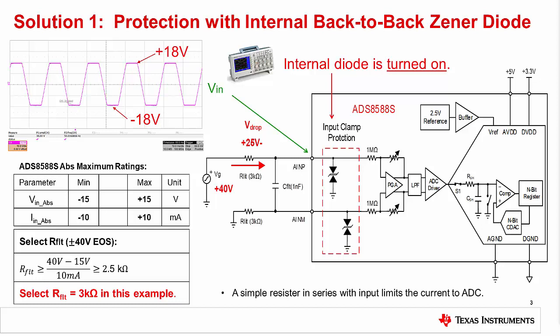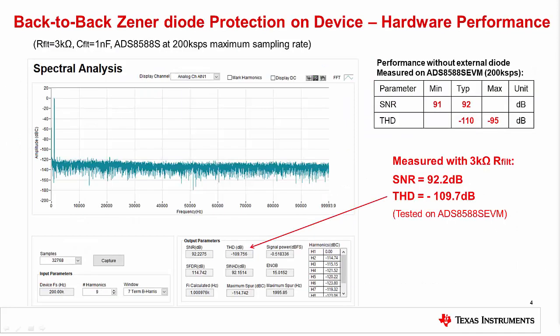This method is not recommended for situations where the clamp could be turned on for extended periods of time, as this can degrade the performance and reliability of the device. Later, we will show an external clamp circuit that can be used for continuous EOS faults. Before moving on, let's take a look at the measured performance of the circuit. This slide shows that the measured performance of the ADS8588S is not impacted by the external 3 kiloohm current limiting resistor. The ADC is running at the full sampling rate, and the measured performance is very close to the typical performance. On the next slide, we will see how using a larger current limiting resistor can impact performance.